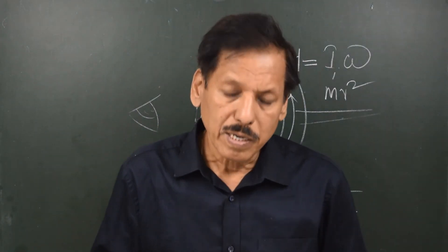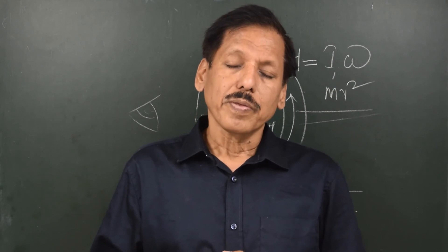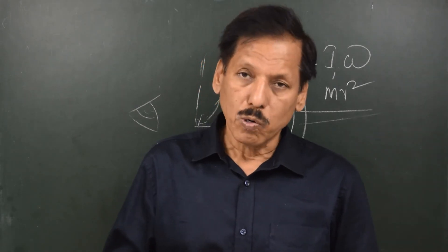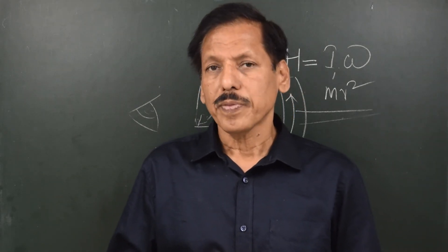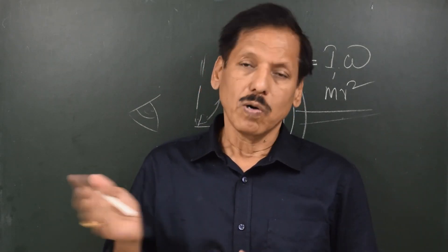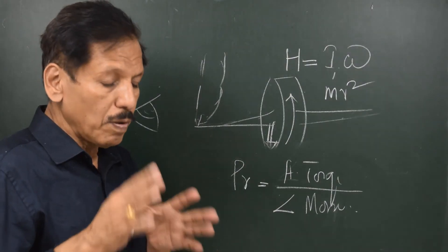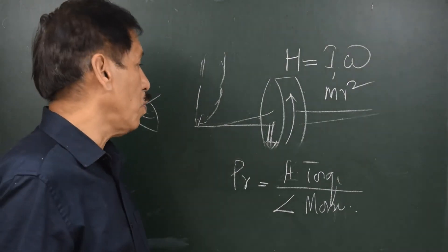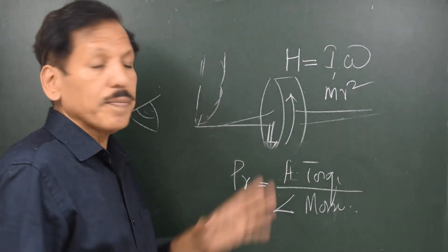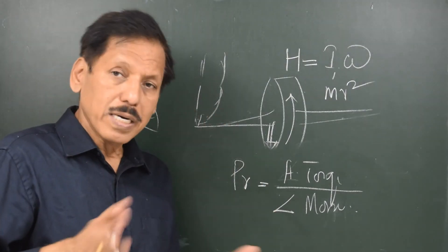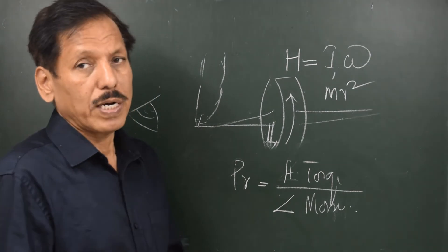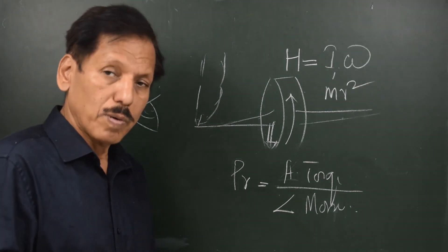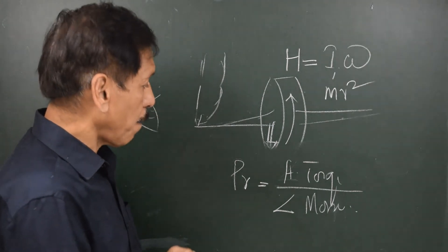Similarly, depending on whether the gyro is top-heavy or bottom-heavy, the axle will move in one direction or the other. The way we want the axle to move, we can make the rotor clockwise, anti-clockwise, top-heavy, or bottom-heavy accordingly.